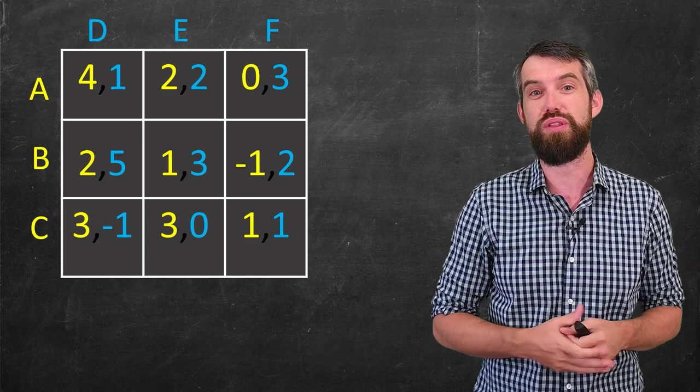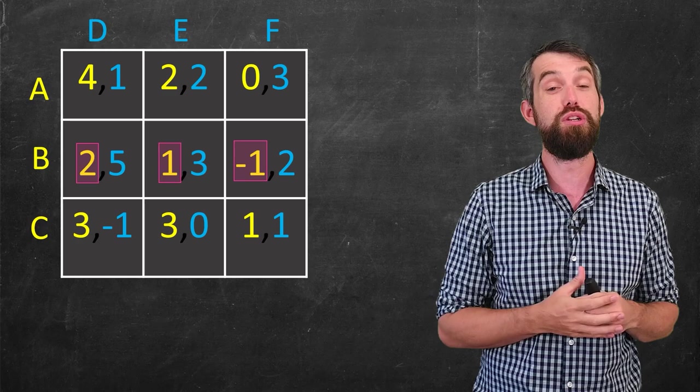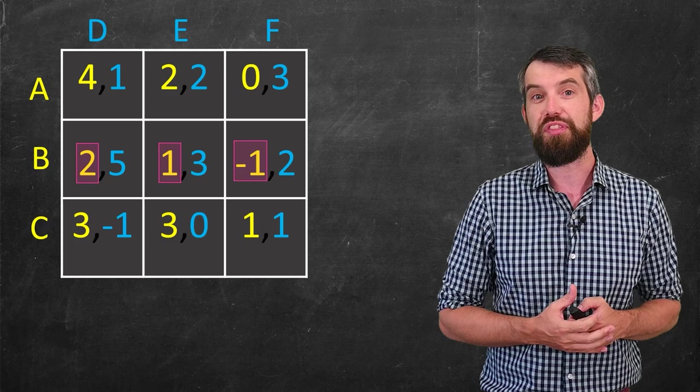So I encourage you to pause and try to figure that out yourself. But if you're just here to enjoy the show, well, I want to focus specifically on option B, where player one plays B. So from player one's perspective, you have these three different numbers, two one and minus one, depending on the choice for player two.